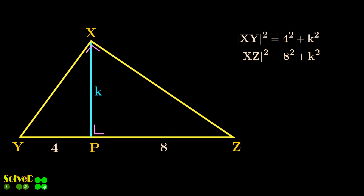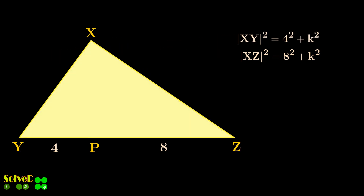Now consider this triangle. Since angle X is 90 degrees, again using the Pythagorean theorem, we can write an equation for the side YZ.